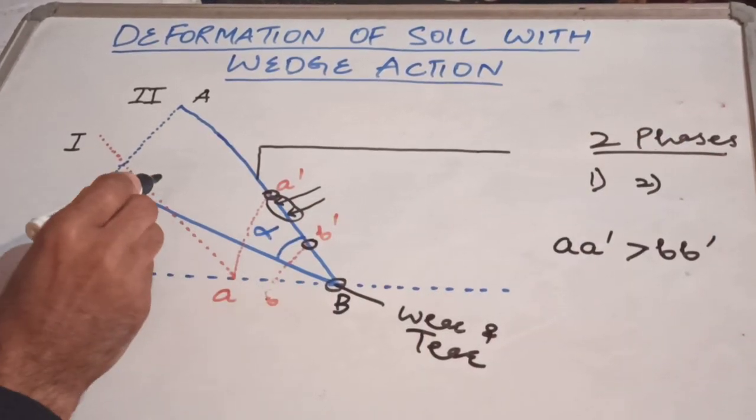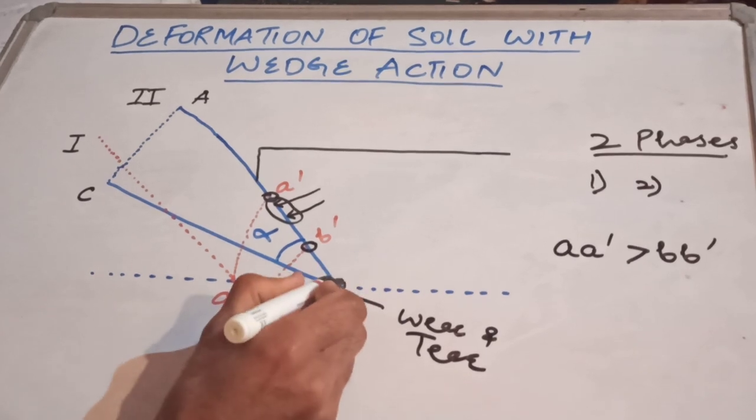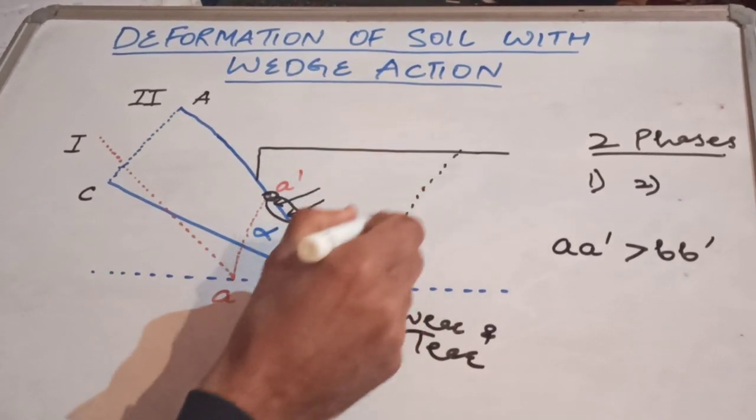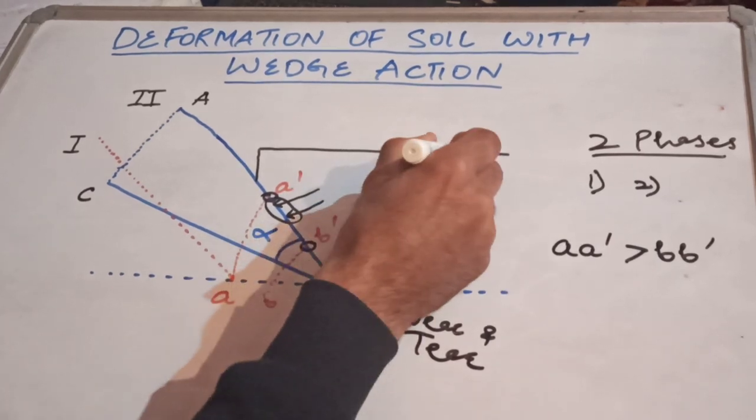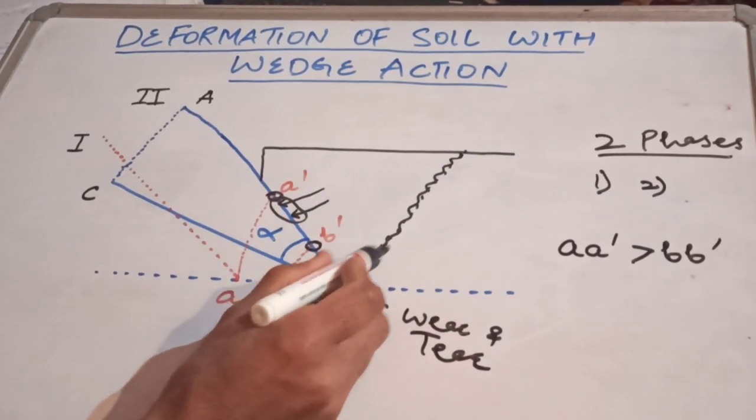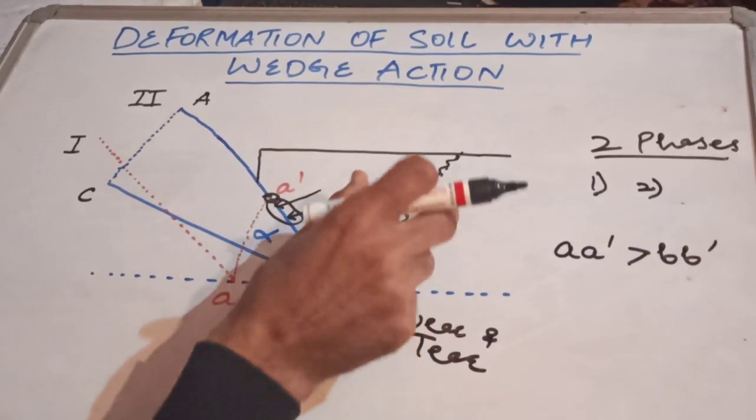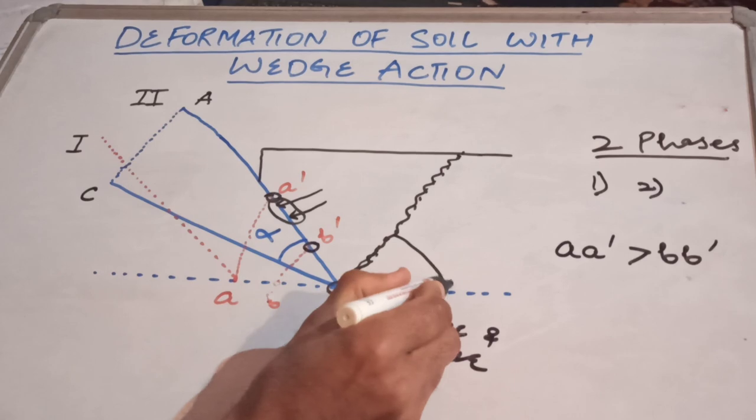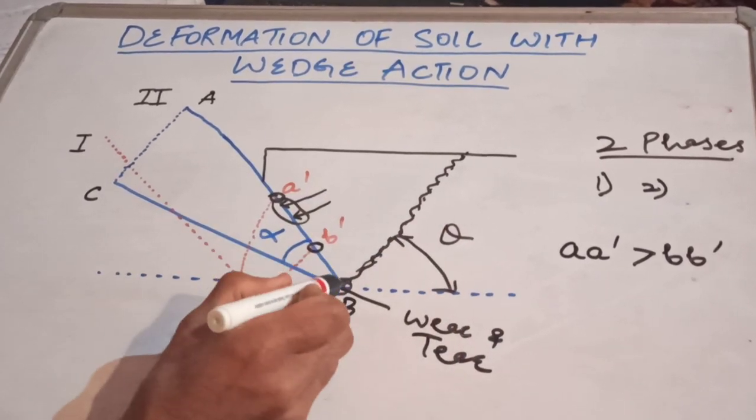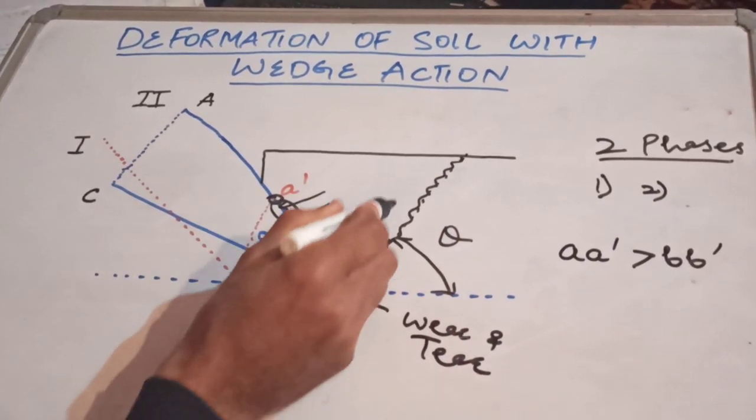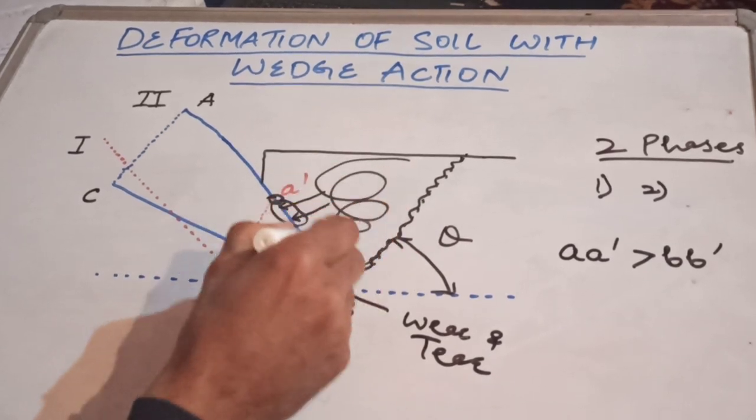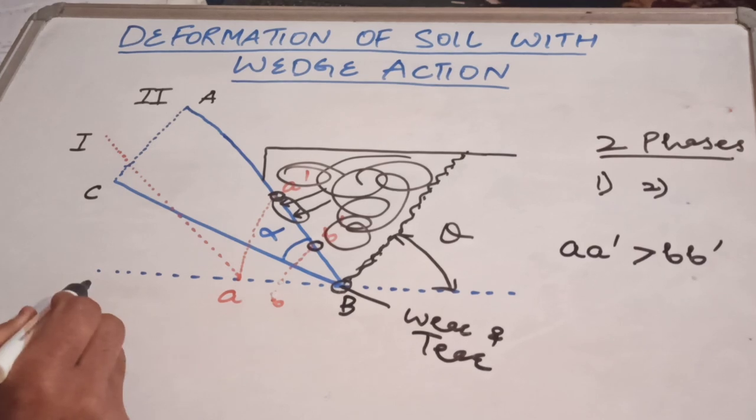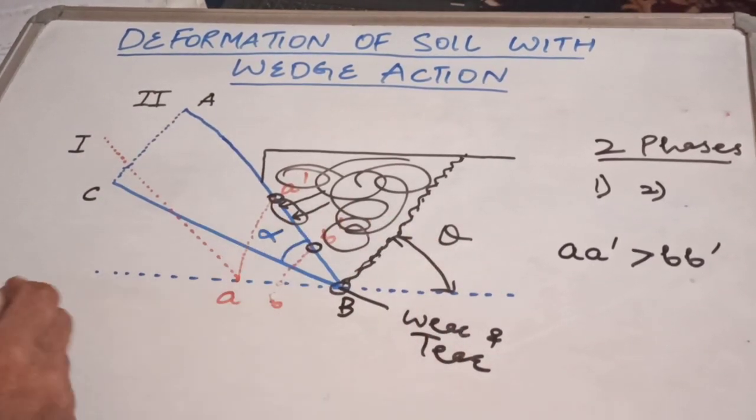In phase number two, as the tillage tool moves forward, fissures or cracks start to generate. This results in prism shaped blocks. The angle is theta. This block separates and goes on top of the tillage tool. It sticks with it.